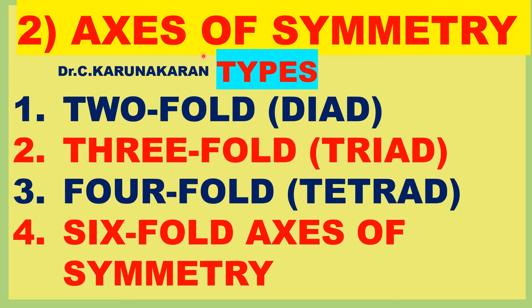Now let us see what is called axis of symmetry. There are four types of axis of symmetry present in crystal systems in general: two-fold or diad axis (C2), three-fold or triad axis (C3), four-fold or tetrad axis (C4), and six-fold axis of symmetry. The six-fold axis is present in hexagonal crystal systems, while C2, C3, and C4 are present in cubic crystal systems.